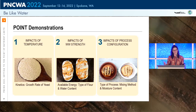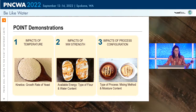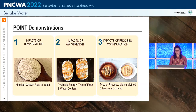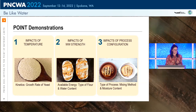I'll look at three different concepts: the impacts of temperature, the impacts of wastewater strength, and the impact of process configuration. I love baking, so I couldn't help but compare this to bread-making — the impacts of temperature relate to kinetics, like the yeast used to grow bread; wastewater strength is similar to the available energy in bread ingredients like flour type and water content; and process configuration relates to the mixing method and moisture control during fermentation. All of these impact the end result, just as in wastewater treatment.